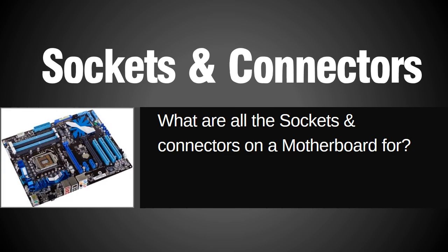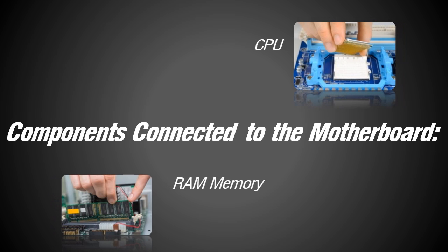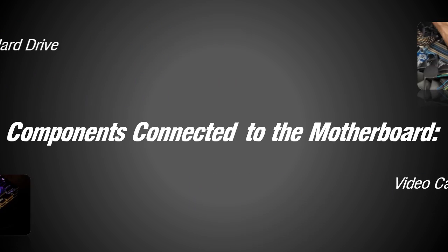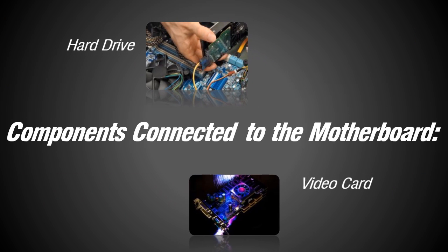What are all the sockets and connectors on a motherboard for? A quick rundown of the primary components connected to the motherboard include the CPU or central processing unit, RAM or random access memory, the hard drive, and the video card.